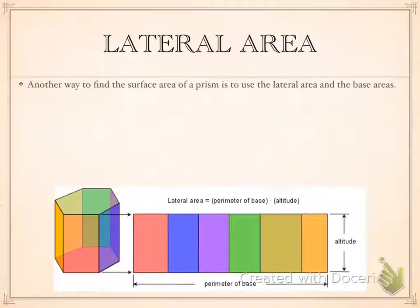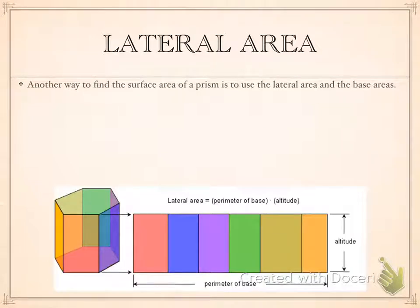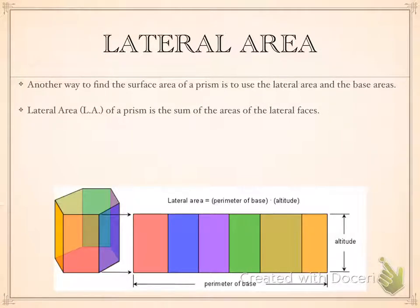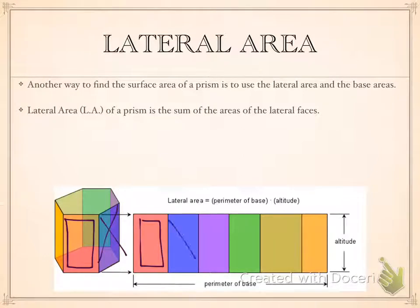Let's continue this lesson by talking about lateral area. The other way of figuring out the surface area for a prism is to calculate its lateral area and then add the areas of the bases to it. The lateral area is the sum of all of the areas of the lateral faces — so like this one corresponds to this, and this one is this one.